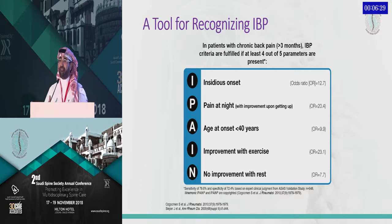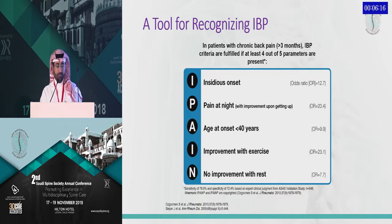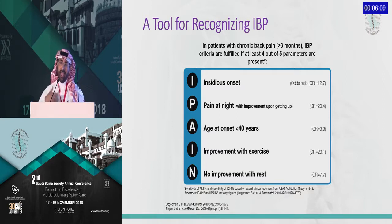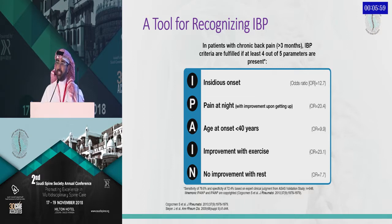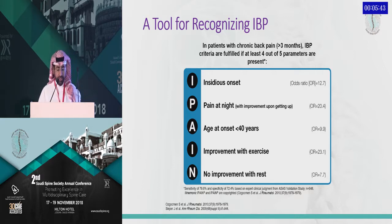This is a tool for recognizing inflammatory back pain developed by ASAS — the Assessment of SpondyloArthritis international Society — using the acronym IBANE, which makes it easy to identify inflammatory back pain. In patients with chronic back pain lasting more than three months, the inflammatory back pain criteria are fulfilled if at least four out of five parameters are present: I for insidious onset, P for pain at night, A for age at onset less than 40 years, I for improvement with exercise, and N for no improvement with rest. If four out of these five are present, this is inflammatory back pain.